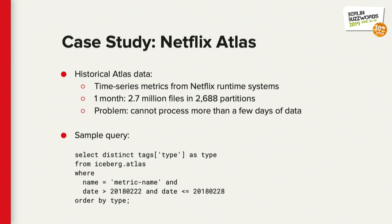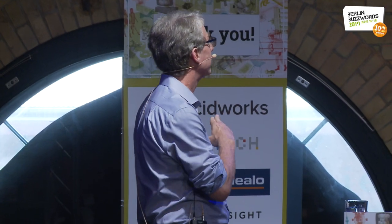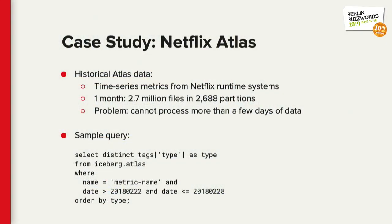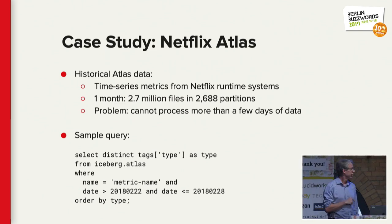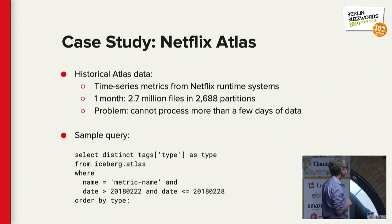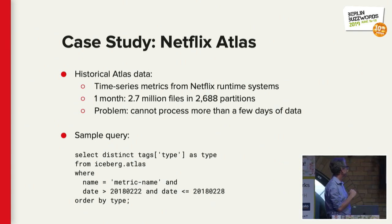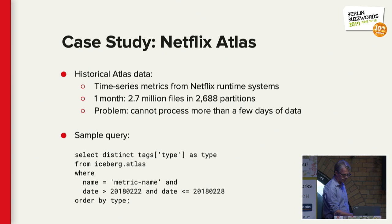They have huge amounts of data at Netflix. They are continually keeping data on everything that you watch, and they need to analyze that because Netflix is a data-driven business. They need to know what people are watching and who's watching what. They run these queries a lot, and this is a time series. One month of data is 2.7 million files, and they couldn't process more than a few days. The query selects distinct tags from a range of dates.